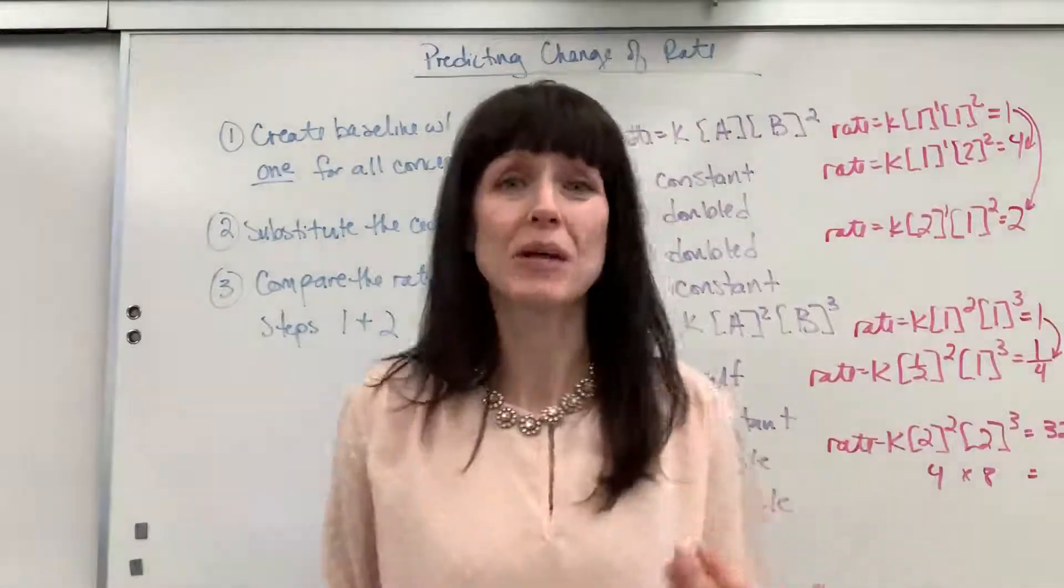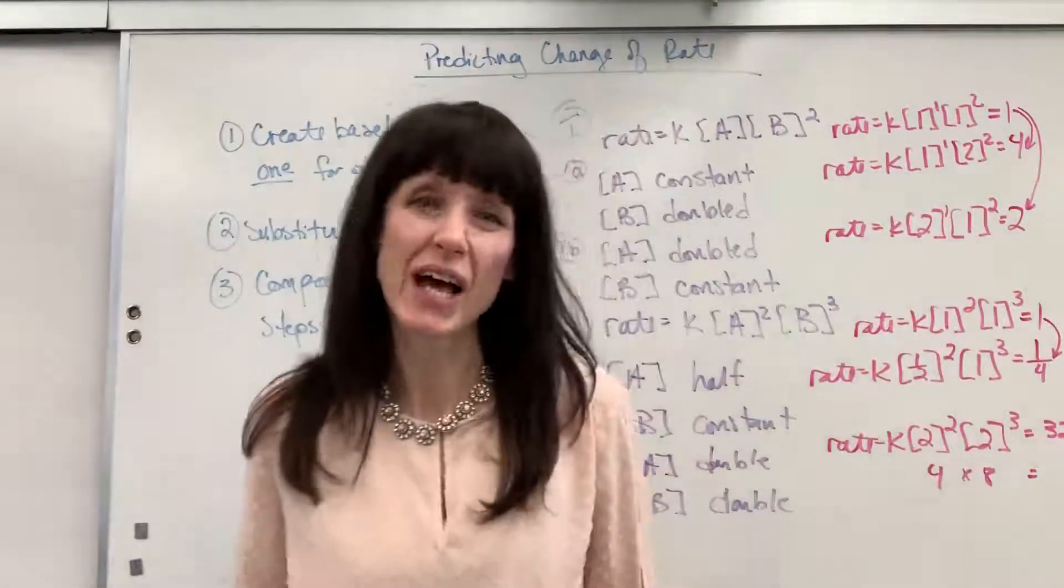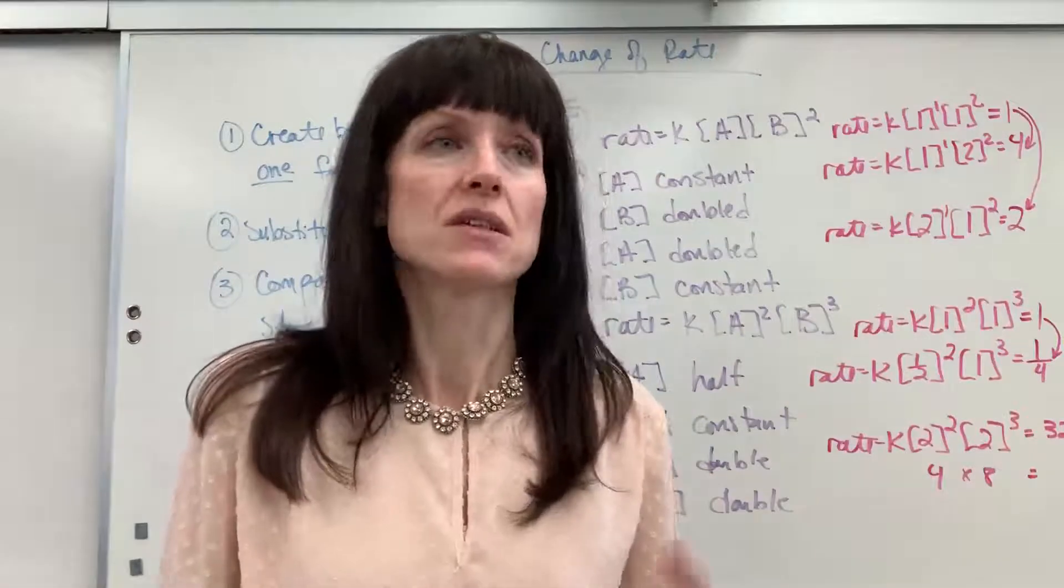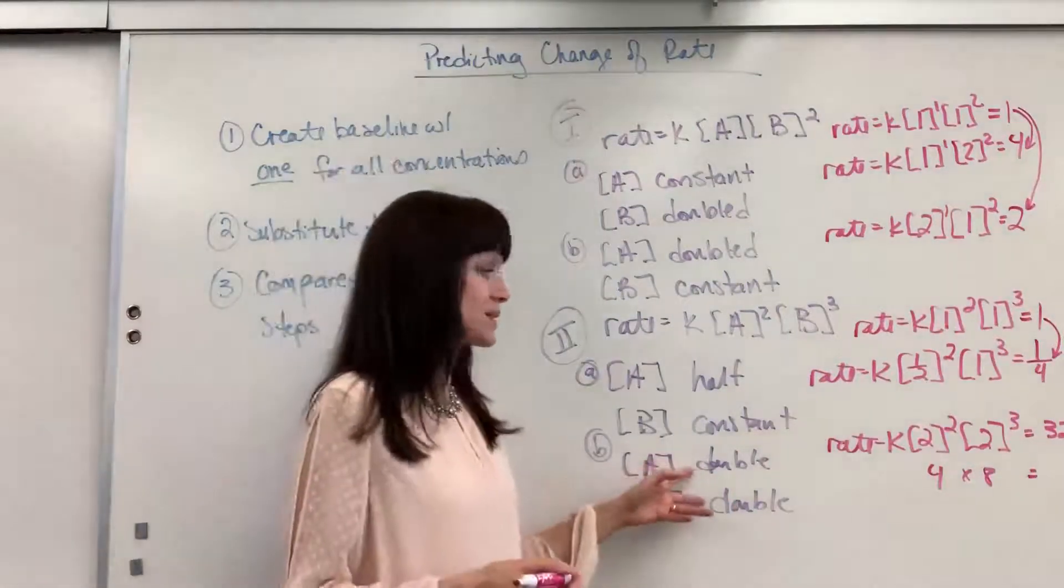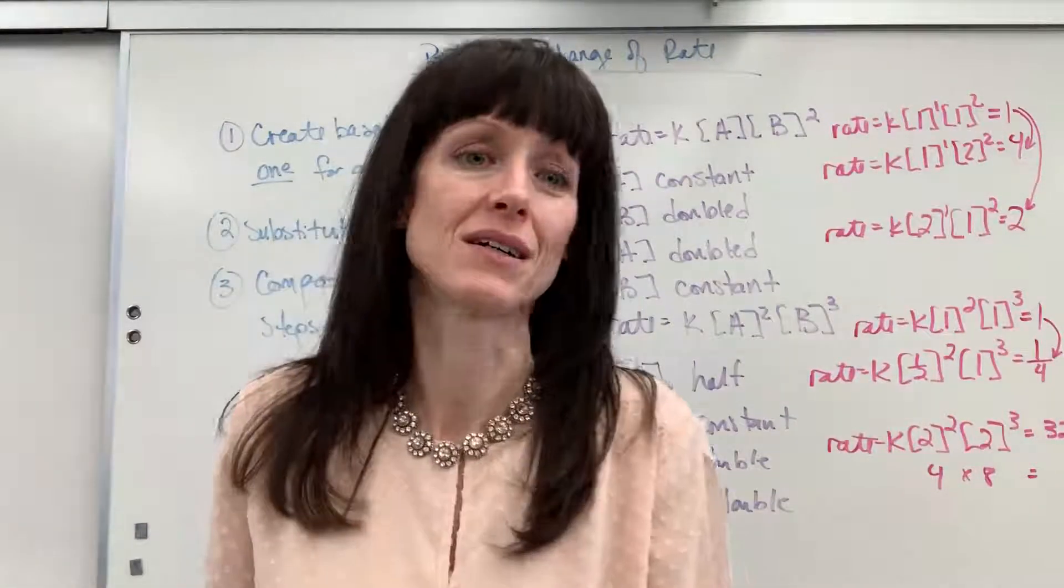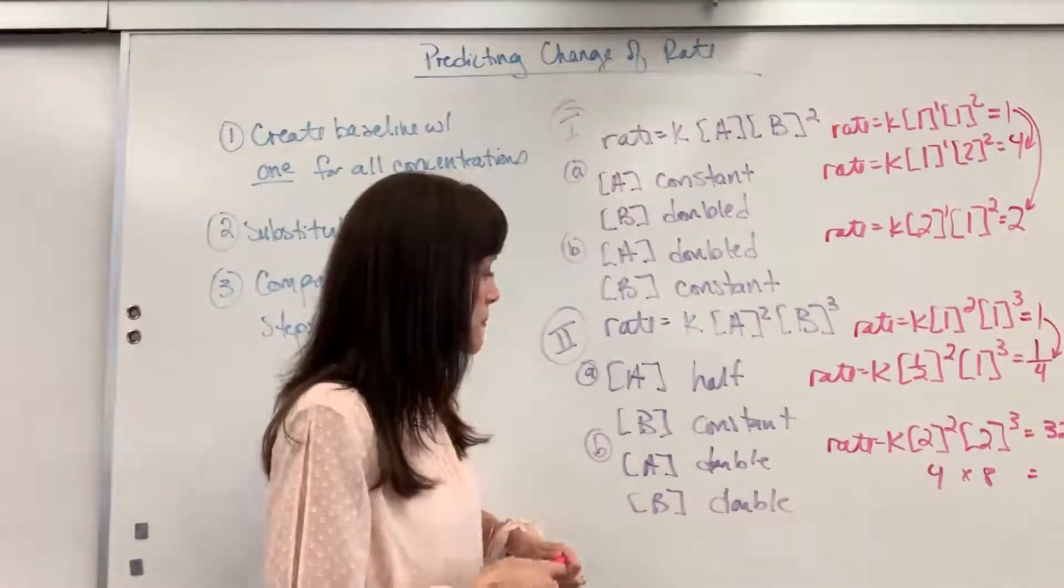Wow. Just by doubling both A and B, this reaction will go 32 times faster. So then we would be weighing cost of money. Is it worth doubling, paying the money to double the reactants to go 32 times faster? There's a good chance that it is. Make some good money for us.